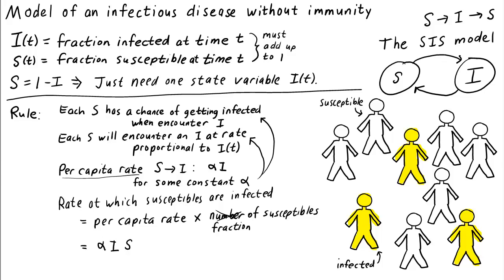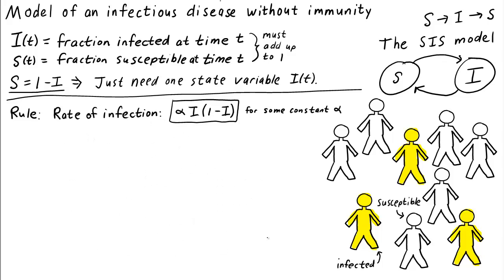But remember, we're not keeping track of the fraction of susceptibles separately. Instead, we're going to let s equal 1 minus i. So we'll write the rate at which susceptibles become infected as alpha times i times 1 minus i. This expression is our rate of infection. On our model here at the right, we can label the s to i arrow by the rate of infection alpha i times 1 minus i.